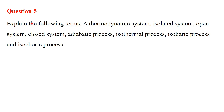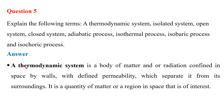Today we are going to see question number five. Question five says: explain the following terms — a thermodynamic system, isolated system, open system, closed system, adiabatic process, isothermal process, isobaric process, and isochoric process. These are the different processes that we need to explain.